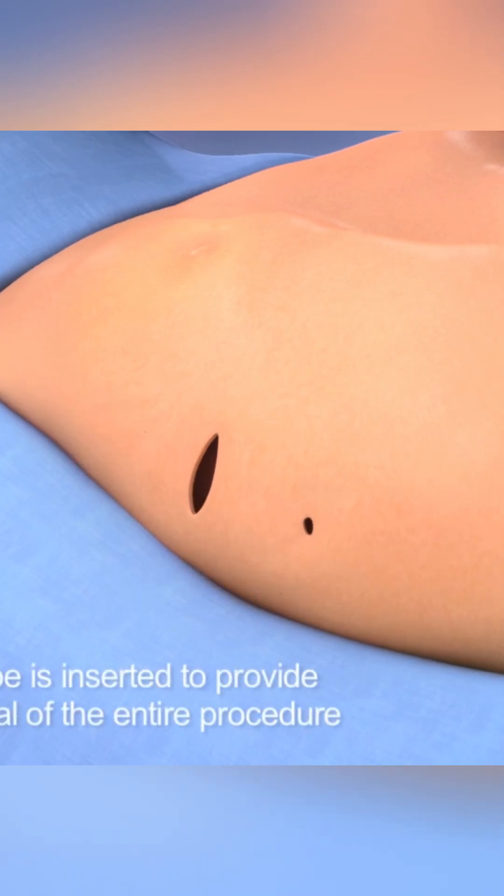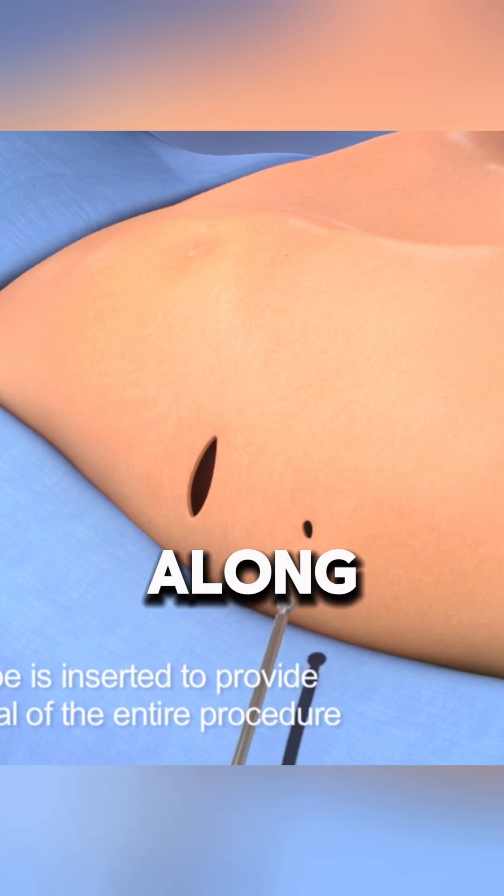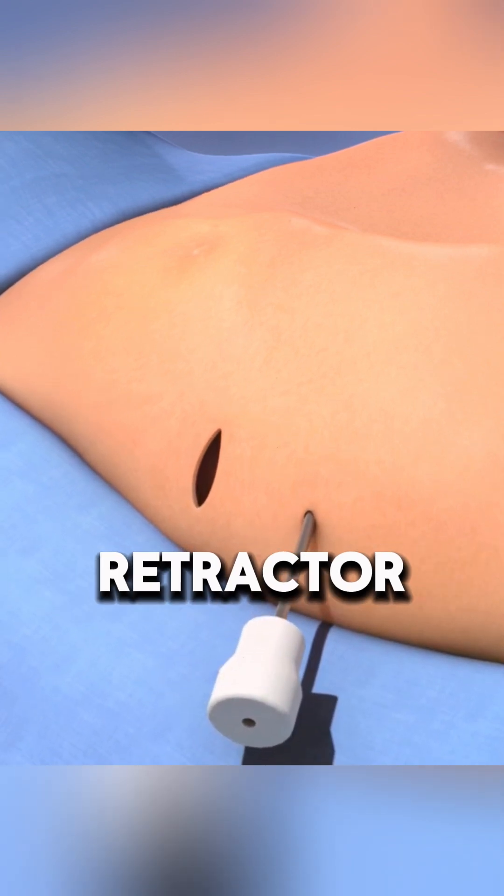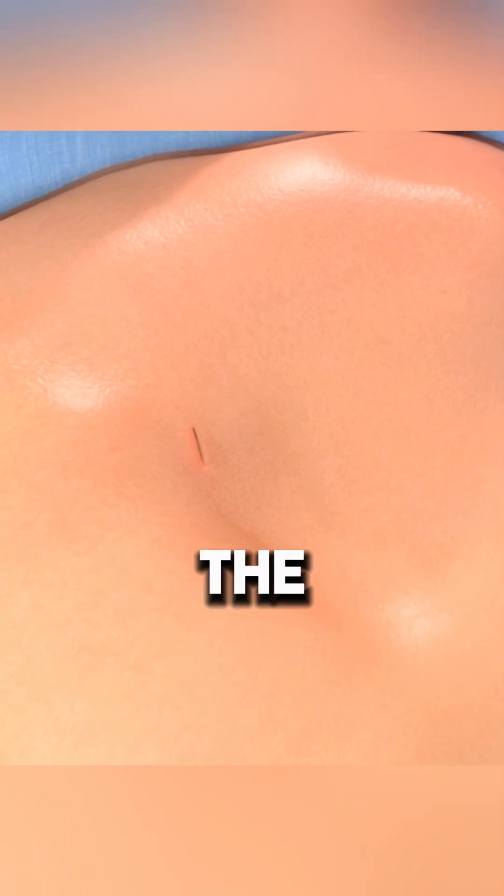Two small incisions are made on either side of the chest along with a small incision for a scope to guide the procedure. A retractor lifts the sternum away from the heart for safety.